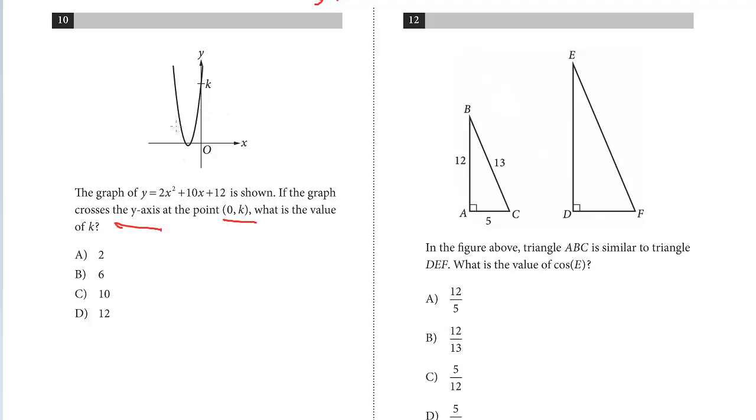They're not asking for the minimum, which would be the vertex. They're just asking where it crosses the y-axis. All you have to do is set x to 0. We put a 0 in here, a 0 in here, and that's it. The y-intercept is 12.